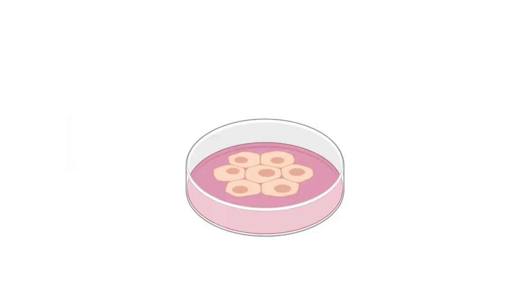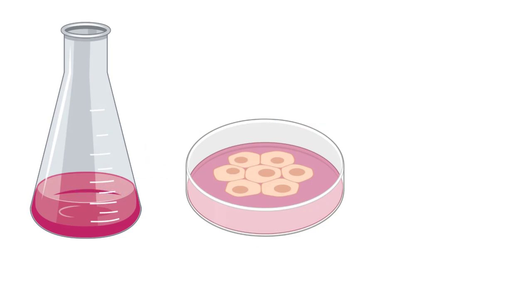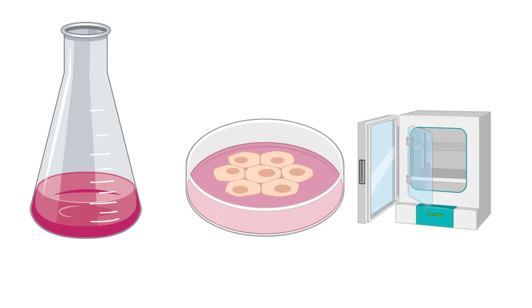In order to keep cells alive in a dish, they must be given proper nutrients, including amino acids, vitamins, and growth factors. All of these essential components together are called growth medium. It is also important that the cell culture dishes are stored under proper conditions where environmental factors are controlled.